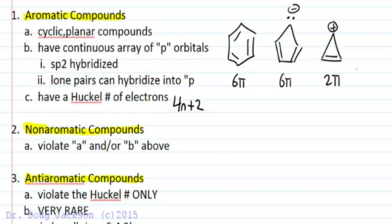They either violate the cyclic requirement, like hexatriene, or you might see that the molecule is not planar. And if we look at cyclooctatetraene, 1, 2, 3, 4 double bonds, 8-membered ring, like a stop sign.